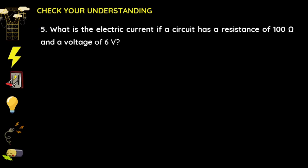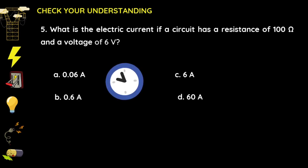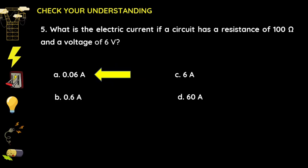Number five: what is the electric current if a circuit has a resistance of 100 ohms and a voltage of 6 volts? A) 0.06 amperes, B) 0.6 amperes, C) 6 amperes, D) 60 amperes. Since you are computing for the current, divide voltage by resistance: 6 ÷ 100 = 0.06 amperes. The answer is letter A, 0.06 amperes.